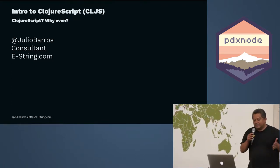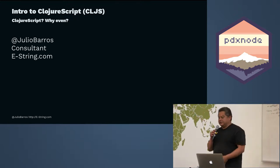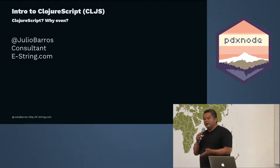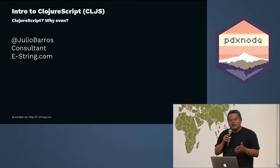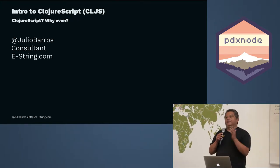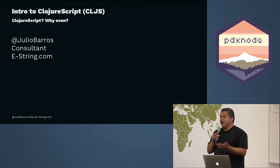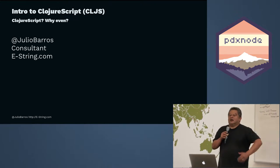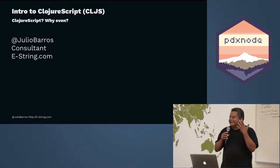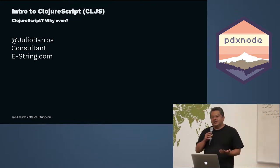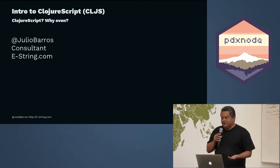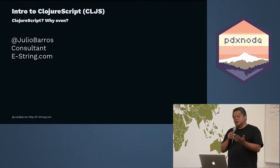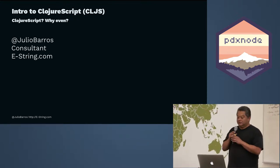We were talking recently and he asked what I was up to. I said I mostly do Clojure, ClojureScript, and Python now. I'm a consultant here in town, and I mostly focus on data engineering, data science, and machine learning type things. Those are the three languages I use — Clojure, ClojureScript, and Python.